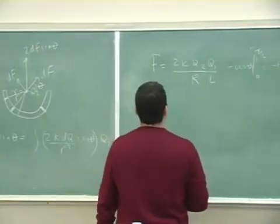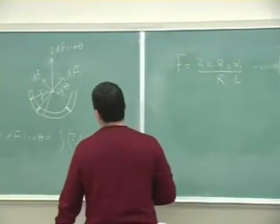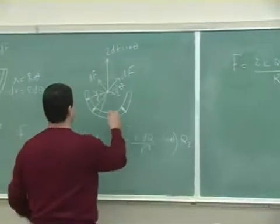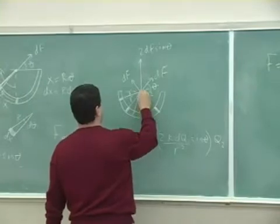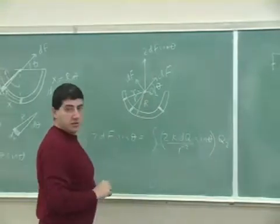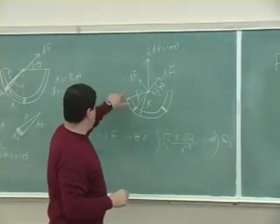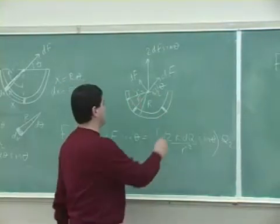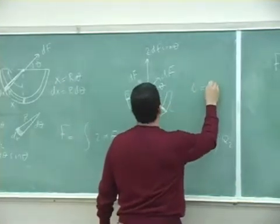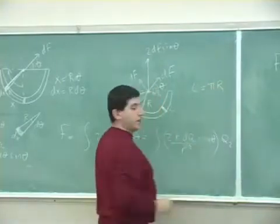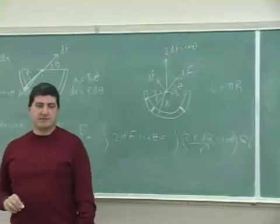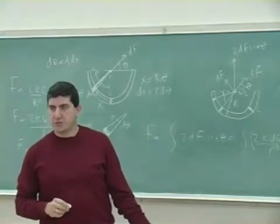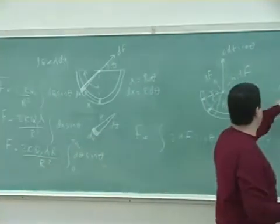Now it's probably best, so that we can relate L to R — you see the radius of the circle here. The radius of the circle is related to the length of the semicircle because L equals pi r. So it's a semicircle, so instead of 2 pi r it's just pi r. So we put here L is pi r.